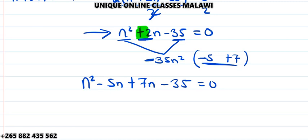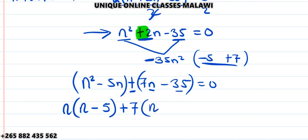Next, the brackets appear, and we should find the common factor in each bracket. In the first bracket we have n(n - 5), and in the second bracket we have 7(n - 5). So we have n(n - 5) + 7(n - 5) = 0.